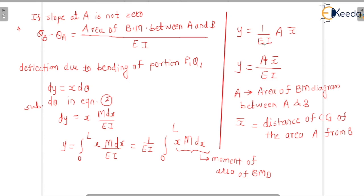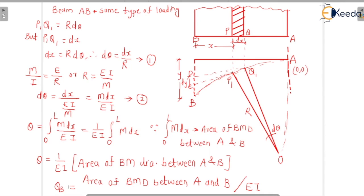In summary, the Moment Area Method gives us two simple formulas: slope θ = A/EI, where A is the area of the bending moment diagram between A and B; and deflection Y = A·x̄/EI, where x̄ is the distance of the centroid of the bending moment diagram area from B. In the next class we will cover how to find the CG distance, using Mohr's theorem.